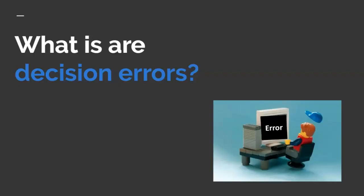Recall that hypothesis testing is the heart of conducting research. In a hypothesis test, we conduct a research study with a sample and then decide if the sample supports a hypothesis about a population. In step 4 of hypothesis testing, we make one of two decisions to decide if the study worked or not. We either decide to reject the null hypothesis, which means the study worked, or we make the decision to fail to reject the null hypothesis, which means the study did not work. Unfortunately, sometimes we can make an error in making this decision.